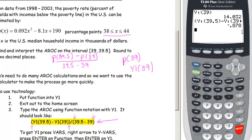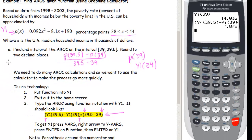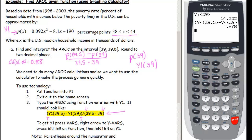The average rate of change is negative 0.88 rounded to two decimal places. Does this make sense? As x increases — as median household income increases — we'd expect the poverty rate to go down, so a negative average rate of change is exactly what we'd expect.